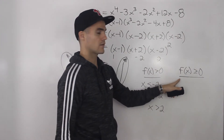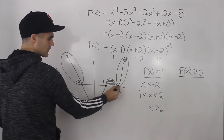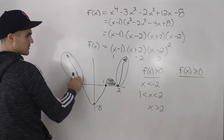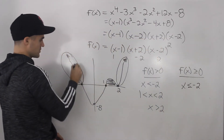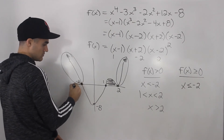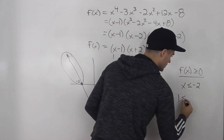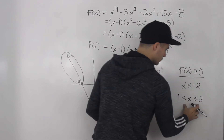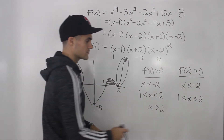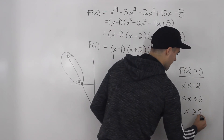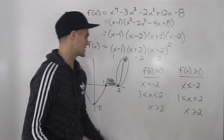Now for when is it greater than or equal to 0. It's going to be the same intervals, but now inclusive of the intercepts. So when x is less than or equal to negative 2, the function is greater than or equal to 0. It's also greater than or equal to 0 when x is between 1 and 2 inclusive, and when x is greater than or equal to 2.